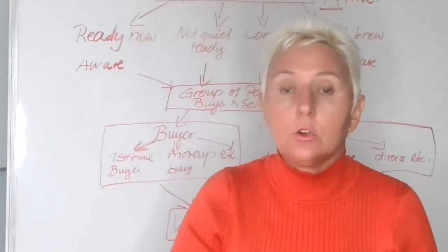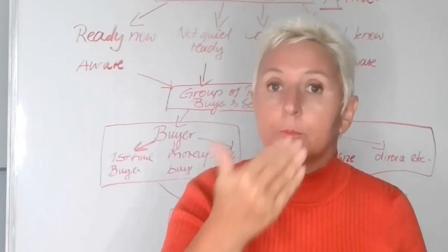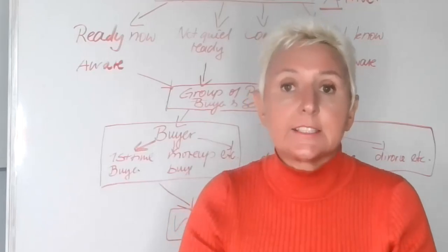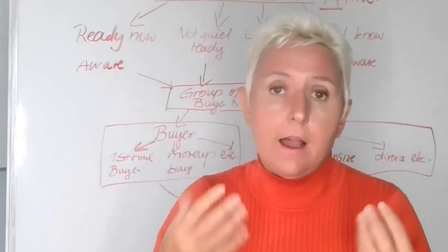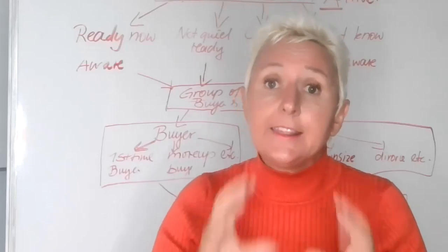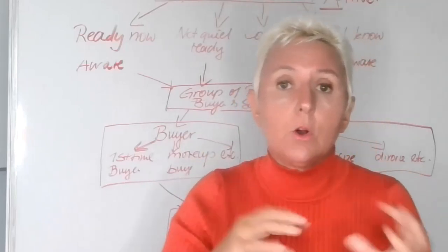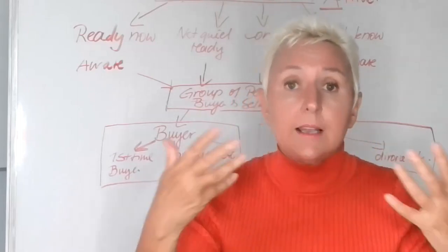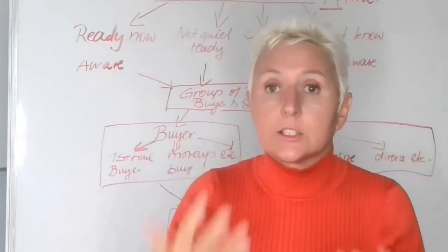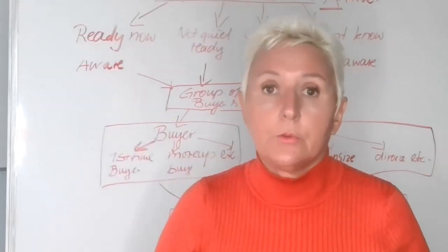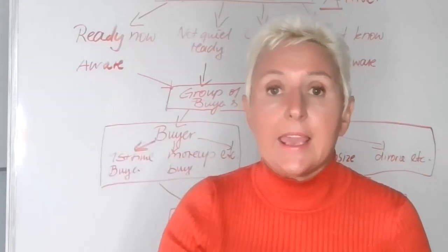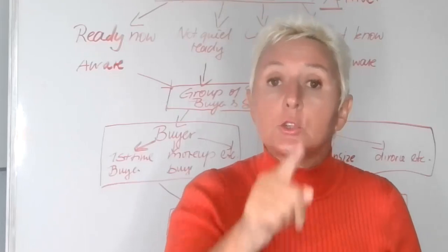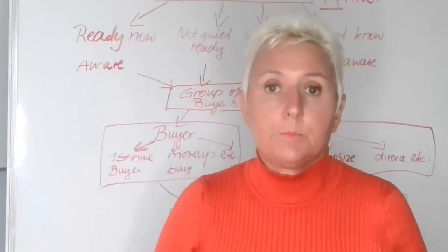That is how you build your professionalism. You become the go-to agent in your community and build your brand, because people now see you as a professional, recognize you, and see how you care about your community. That is why the first step when building your advertising strategy is level one — or level A — where we want to attract or repel the people we don't want to work with. If you want our ABC strategy sheet, let me know down below and I'm happy to message it to you so you can implement it in your business today.